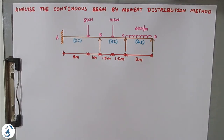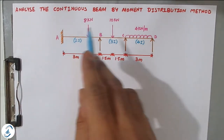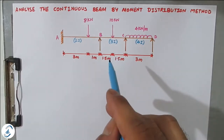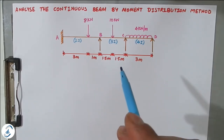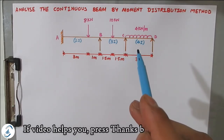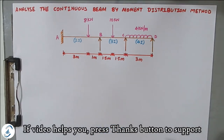Hello friends, welcome back to All About Structural Analysis and Design. We have started the new method of analyzing an indeterminate beam — the moment distribution method. We have seen one problem which was fixed at both ends. Today's problem has one side fixed and another side simply supported. The link to problem number one is in the description box.